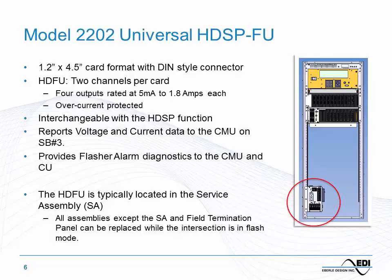The flasher unit uses the same exact card — the load switch and flasher are interchangeable. In this cabinet configuration, the flasher is located down in the service assembly, where incoming power first attaches to the cabinet along with main circuit breakers and transient protection. This enables a big safety improvement: all other assemblies — outputs, inputs, controllers — everything except the field termination panel can be replaced while the signals are in flash. If the flasher or service assembly fails we have to go dark, but all other assemblies can be replaced with power still going to signals in flash.